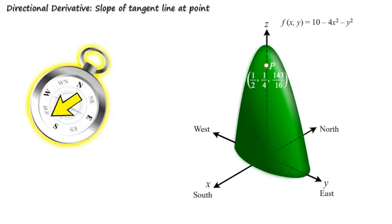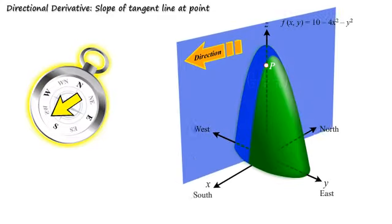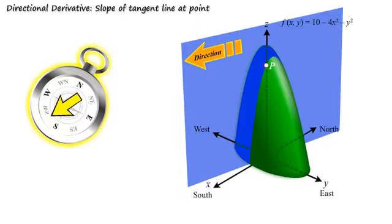As you will see, we specify the direction using a vector in x and y. Once we have chosen the direction, we consider a vertical plane that is parallel to the chosen direction and passes through the original point. The plane intersects the graph of the function in a curve, and the slope of the line tangent to this curve is the directional derivative.